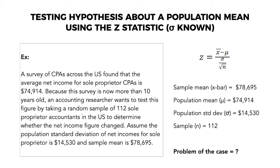We have the different values: sample mean of $78,695; population mean of $74,914; population standard deviation of $14,530; and sample size of 112. We first need to identify what is the problem of the case so that we are guided about what exactly is the hypothesis we are trying to solve. What we are trying to challenge is to find out if the average net income for sole proprietor CPAs is really $74,914.